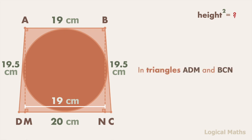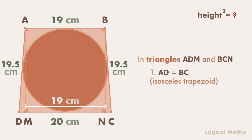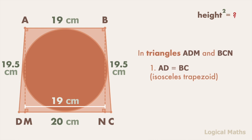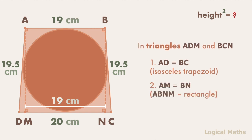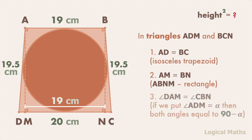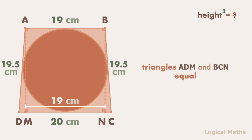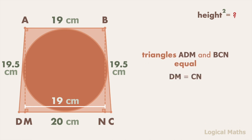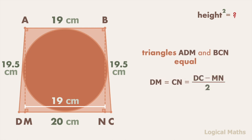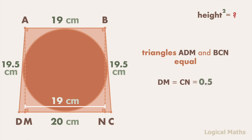In triangles ADM and BCN: AD equals BC since we have an isosceles trapezoid; AM equals BN because ABMN is a rectangle; and angle DAM equals angle CBN. So triangles ADM and BCN are congruent. Then DM equals CN, and each equals DC minus MN over 2. After substituting the values we get 20 minus 19 over 2, which equals one-half, or 0.5.